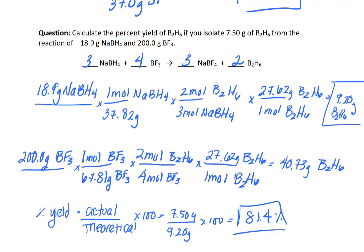Here is a problem that puts all of it together — limiting reactants, theoretical yield, and percent yield. Go ahead and look at this problem, try it yourself, and we will stop the video at this point. As always, thank you for your attention and your patience with my children. This is Katoni, signing out.